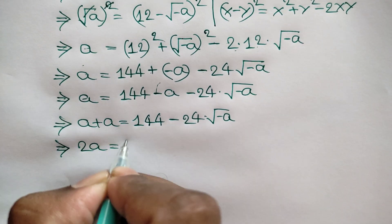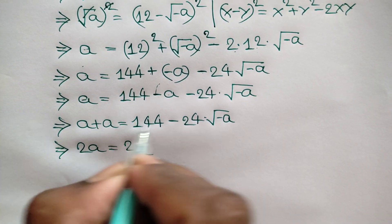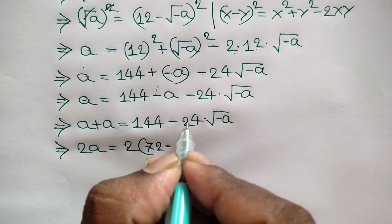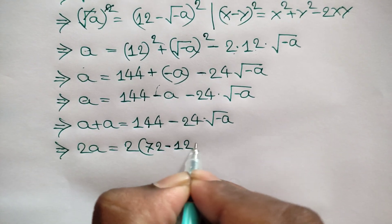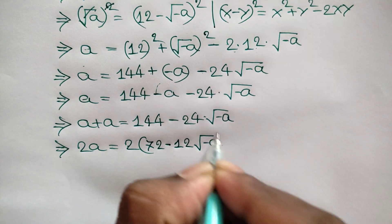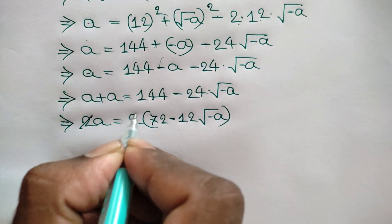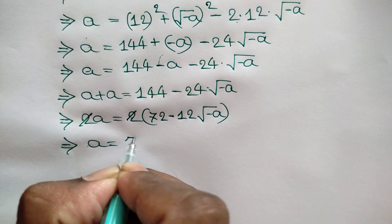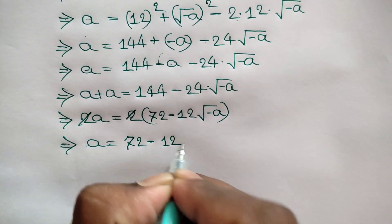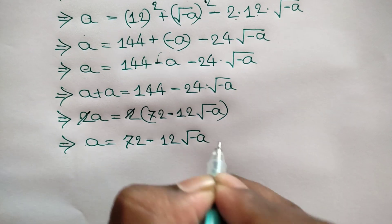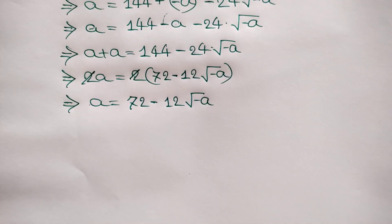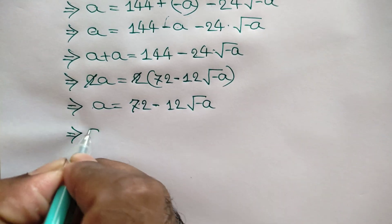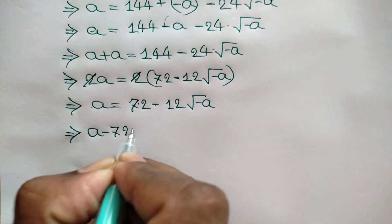So 2a equals 144 minus 24 times square root of negative a. Dividing both sides by 2, we get a equals 72 minus 12 times square root of negative a. Now taking 72 to the left side, we get a minus 72 equals negative 12 times square root of negative a.